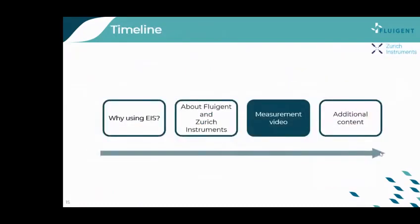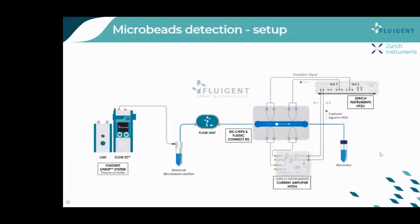Now we have covered the EIS measurement principles and presented our companies and instruments. Let's have a look at the real measurement setup. Here you can find the scheme of the setup to perform measurements on micrometer beads. The lineup system consists of one Fluorizy and a Link. The Fluorizy is connected to the reservoir containing the 20-micrometer microbead solution, which is subsequently connected to the EIS microfluidic device. The tubing passes through a flow unit to monitor and control the flow rate. Once injected inside the chip, the microbeads pass the electrode pairs, and impedance measurements are performed using the HF2LI lock-in amplifier coupled with the HF2TA trans-impedance amplifier.